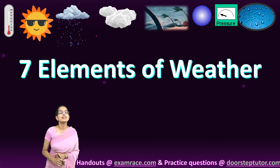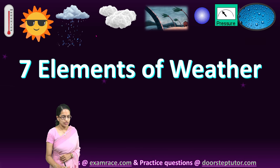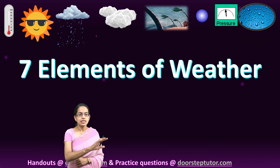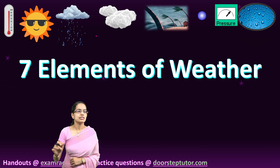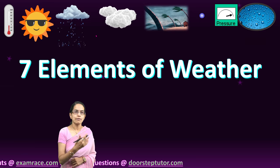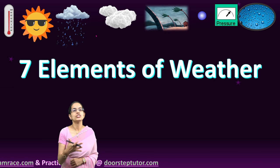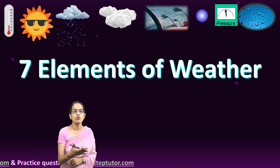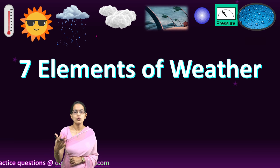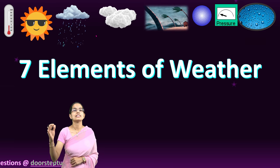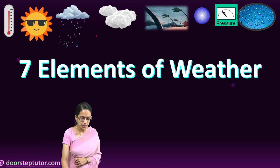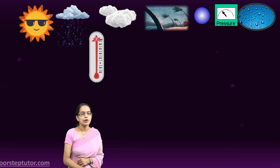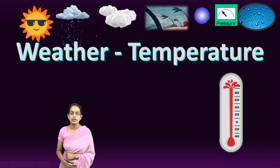Let's talk about seven elements of weather. The seven elements are temperature, sunshine, rainfall, cloud, wind, pressure, and humidity. Let's talk about these one by one.